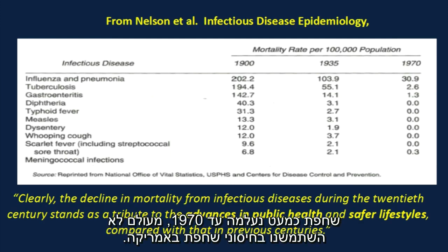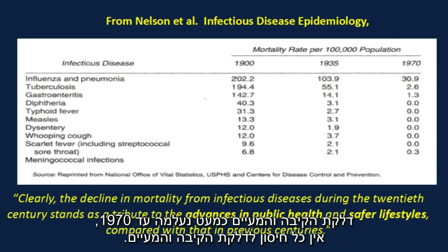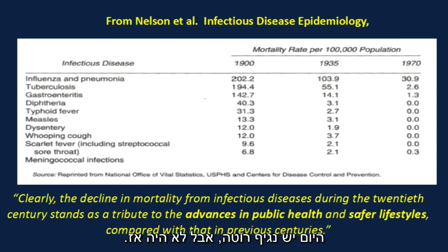Tuberculosis — almost gone by 1970. We never used the BCG vaccine in America. Gastroenteritis — almost gone by 1970. There's no gastroenteritis vaccine. Now today there's rotavirus, but there wasn't then.